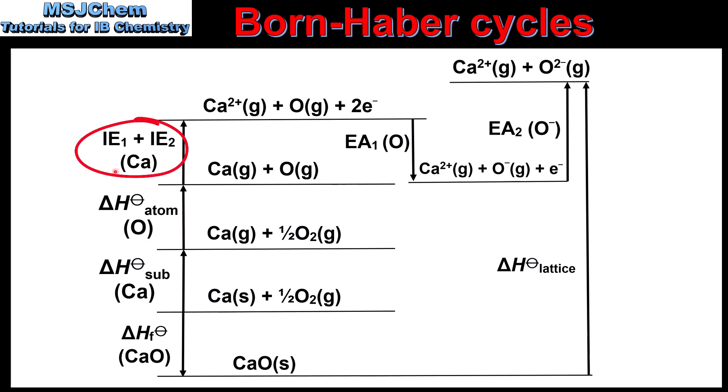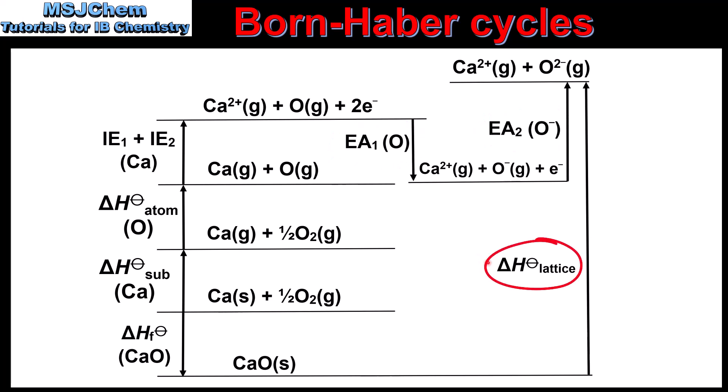Next we have the first and second ionization energies of calcium. This results in the formation of 1 mole of gaseous 2+ ions. Moving over to the right we have the first and second electron affinities of oxygen. The first electron affinity of oxygen is exothermic, and the second electron affinity of oxygen is endothermic. And finally we have the lattice enthalpy, which results in the formation of 1 mole of gaseous calcium ions and 1 mole of gaseous oxide ions.